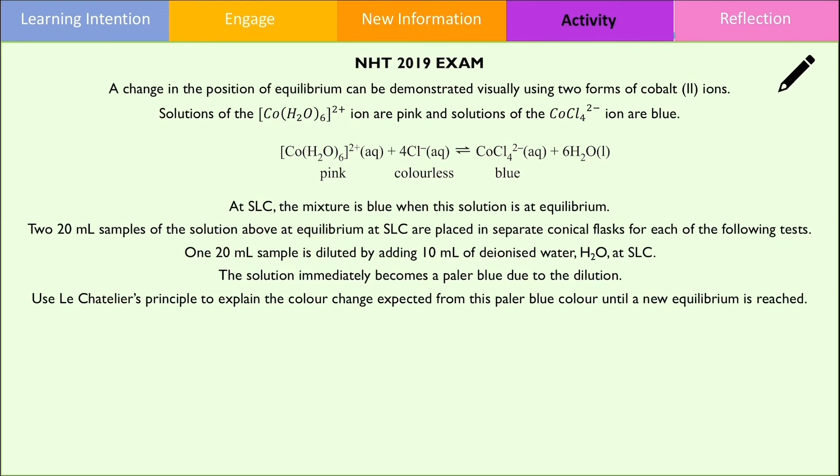In the last question, it provides information that the reaction mixture is blue when the system is at equilibrium. This means the extent of the reaction lies towards the right. When the sample is diluted, it becomes a paler blue. We need to use Le Chatelier's principle to explain the colour change.